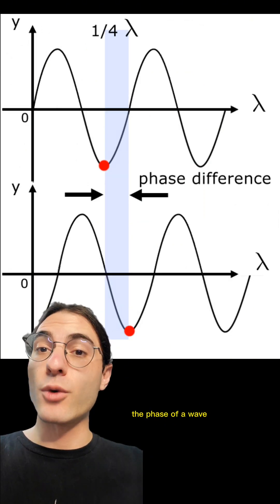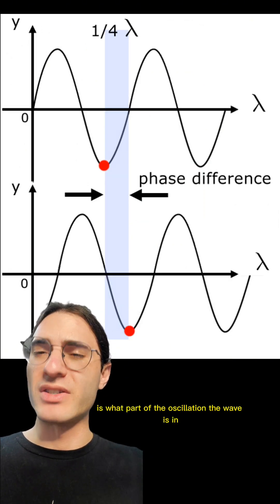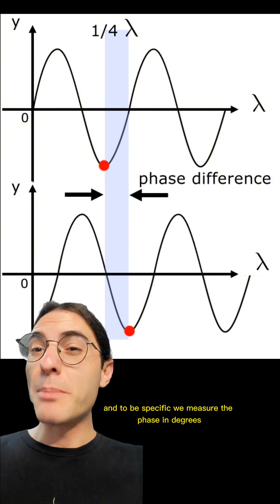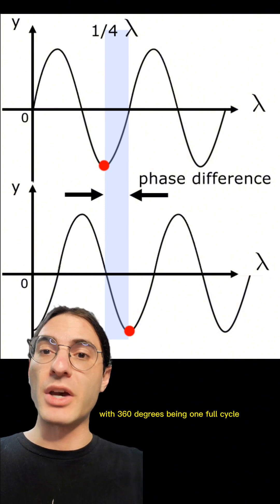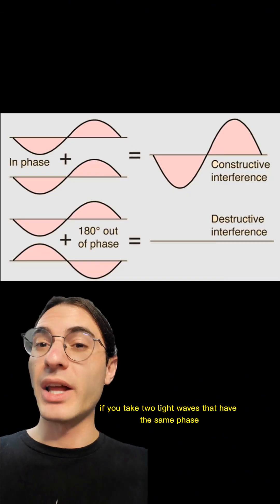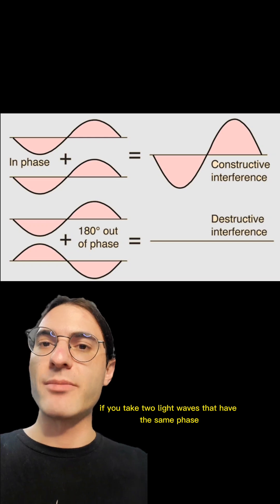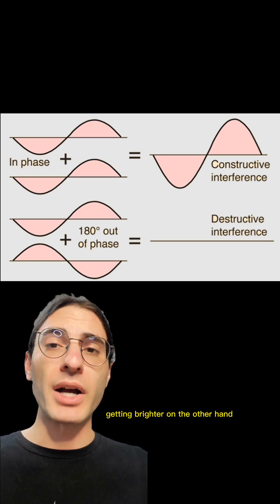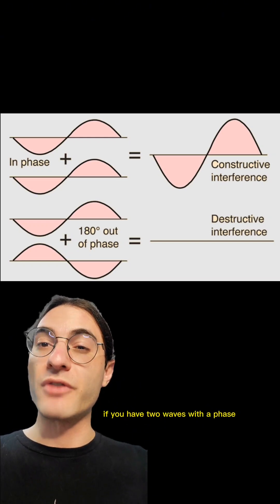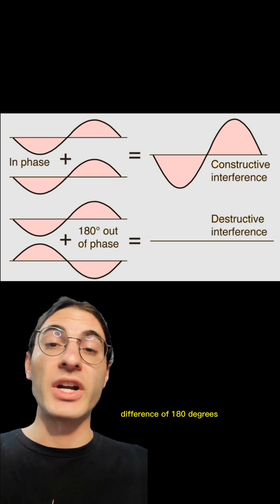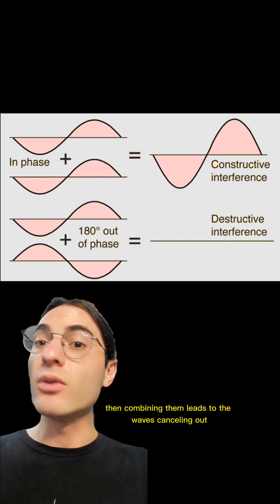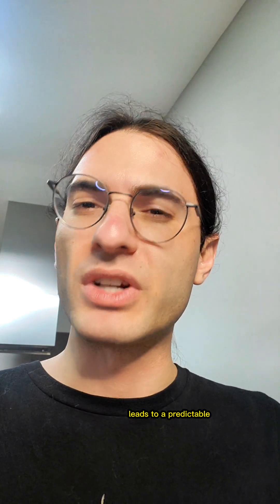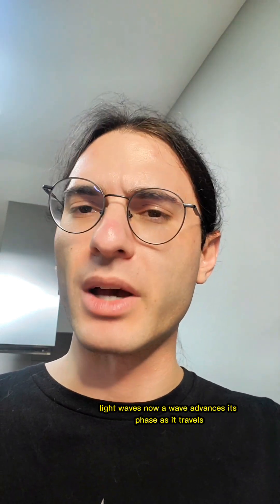To be more precise, the phase of a wave is what part of the oscillation the wave is in. We measure the phase in degrees, with 360 degrees being one full cycle. If you take two light waves that have the same phase and combine them, they add together, getting brighter. On the other hand, if you have two waves with a phase difference of 180 degrees, or pi radians, then combining them leads to the waves canceling out, leaving complete darkness.